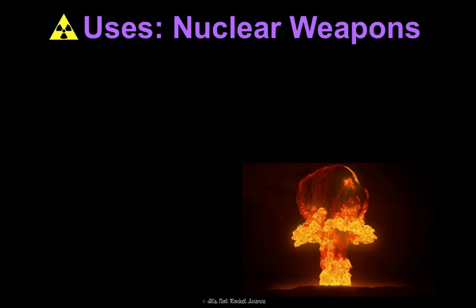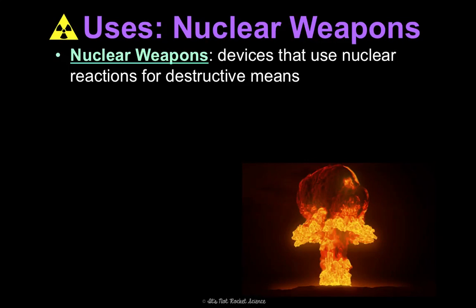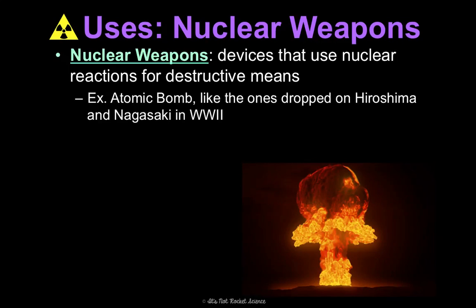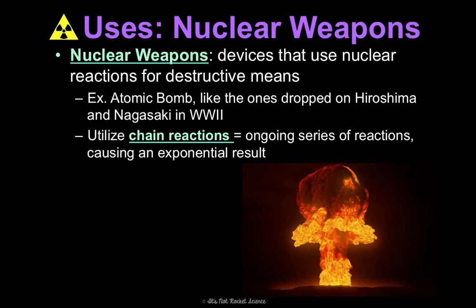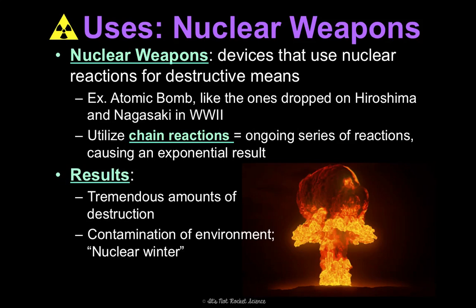Another use for nuclear chemistry is nuclear weapons — devices that use nuclear reactions for destructive purposes. One of the most well-known examples is the atomic bomb, like those dropped on Hiroshima and Nagasaki by the United States in World War II. These weapons utilize chain reactions: an ongoing series of reactions where one thing causes another, creating an exponential result. This leads to tremendous destruction, contamination of the environment — called a nuclear winter — and long-term effects from radioactive waste like mutations and cancer.